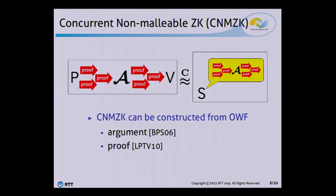And like statistical zero-knowledge, concurrent non-malleable zero-knowledge is also known to be constructible from one-way functions. In particular, Barak and Sahai showed that a concurrent non-malleable zero-knowledge argument can be constructed from one-way functions, and a subsequent result showed that the concurrent non-malleable zero-knowledge proof can also be constructed from one-way functions.